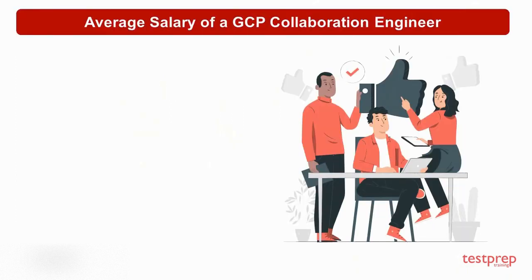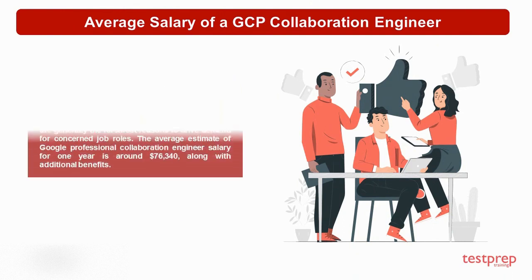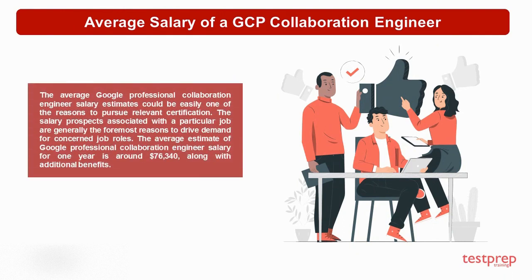Now let's see the average salary of a Google Cloud Professional Collaboration Engineer. The average salary estimates could easily be one of the reasons to pursue relevant certification, as salary prospects are generally a foremost driver of demand for job roles. The average estimate for one year is around $76,340, along with additional benefits.